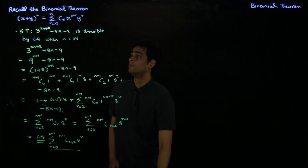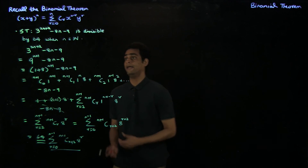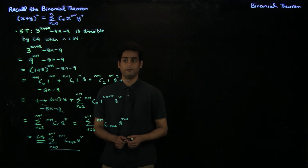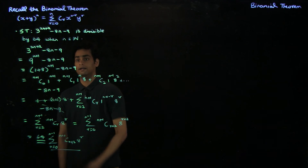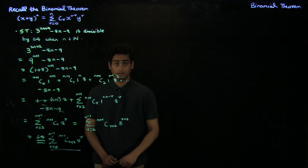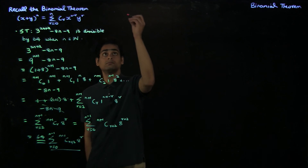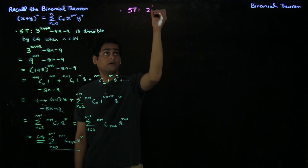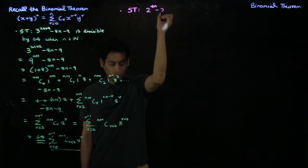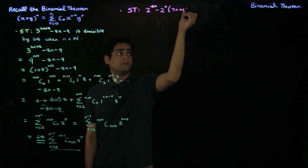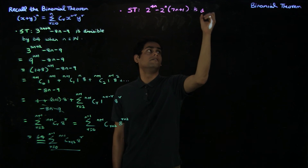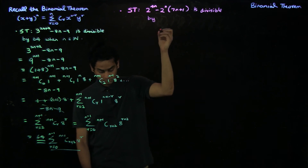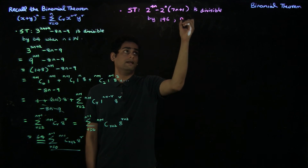We've seen an application of the binomial theorem where we re-expressed our given term in a form where we could use the binomial expansion and derive a divisibility result. Let's look at a second example, which asks to show that 2 power 4n minus 2 power n times 7n plus 1 is divisible by 196 whenever n is a natural number.